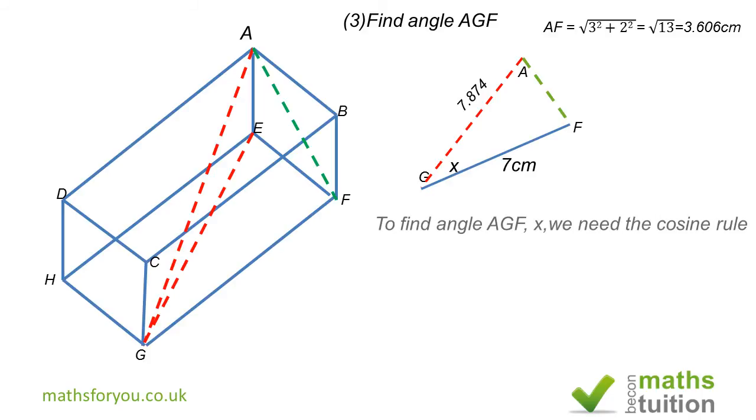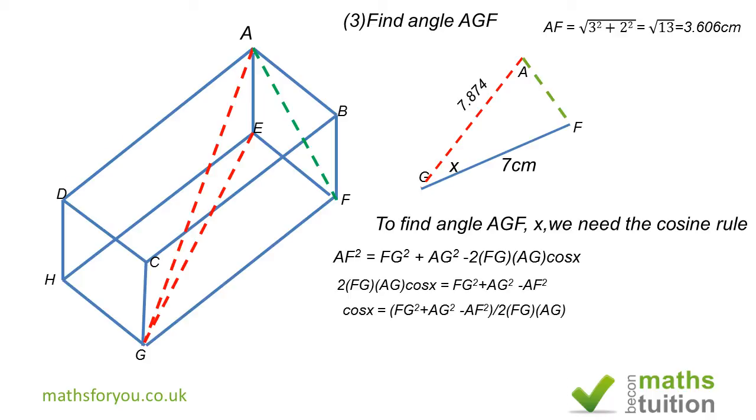Cosine rule says that, for instance, if you want to find AF squared, you need FG squared plus AG squared minus 2 times FG times AG times cosine x, where x is the value of angle AGF. So now if we take AF squared across and bring across 2 FG AG cos x, we end up with this. To find cos x, we need FG squared plus AG squared minus AF squared, all of that divided by 2 times FG times AG. You must be very careful when you do this not to confuse these signs.